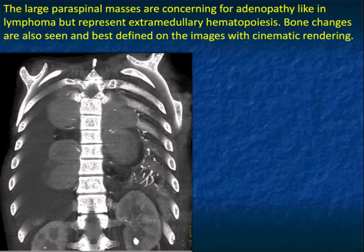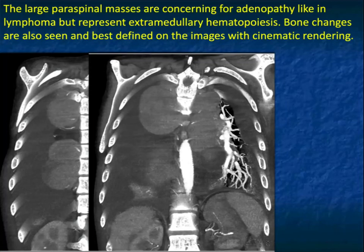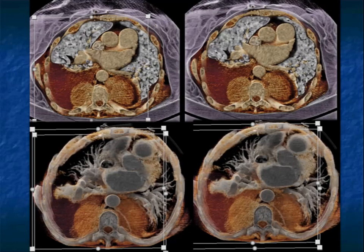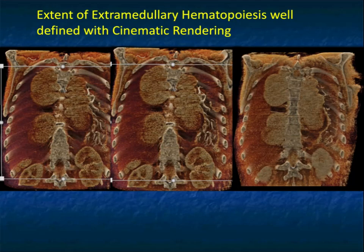These masses can be very large. This case was initially thought to be lymphoma. People will go through lymphoma, neurogenic tumors, and metastasis — all reasonable. One thing you notice, especially in the last set of images, is something abnormal with the bone — that could be myelofibrosis or thalassemia. With cinematic rendering, the large paraspinal masses are beautifully shown, and the large lobular masses pushing against the bone have attenuation very similar to the kidneys when looking at texture mapping.